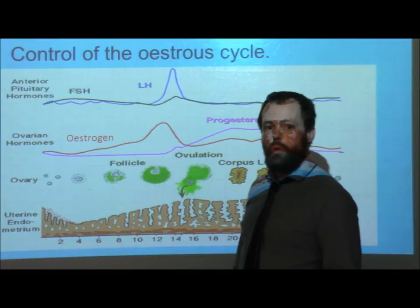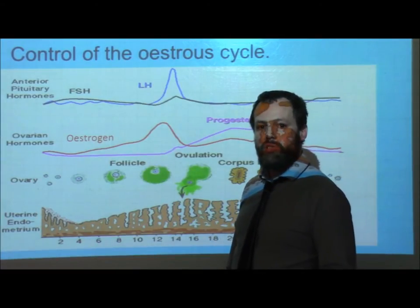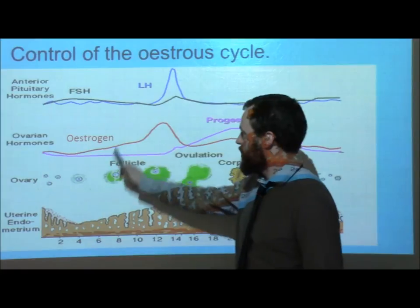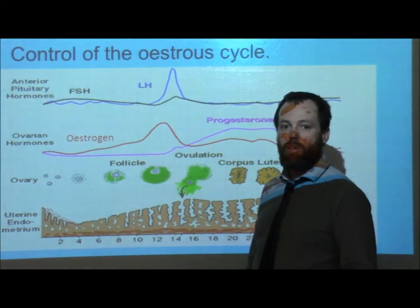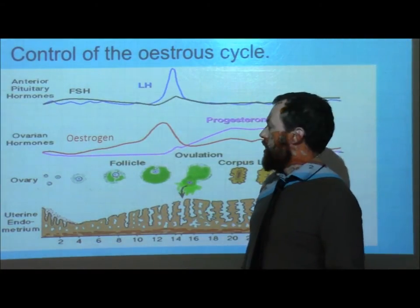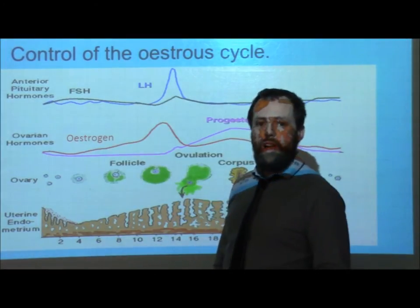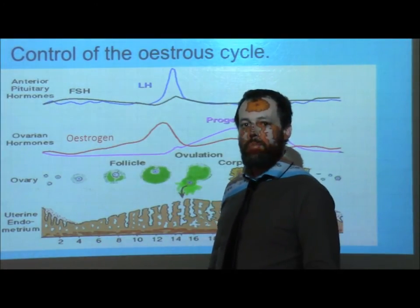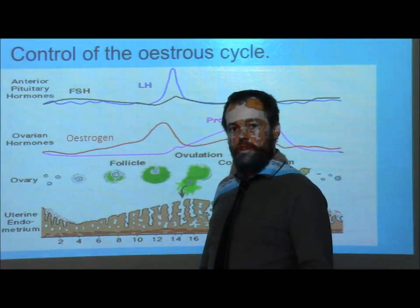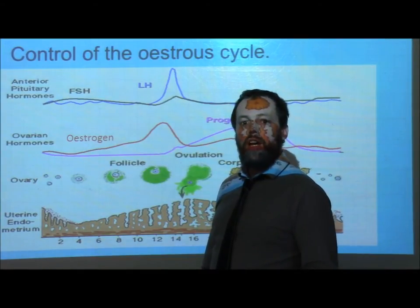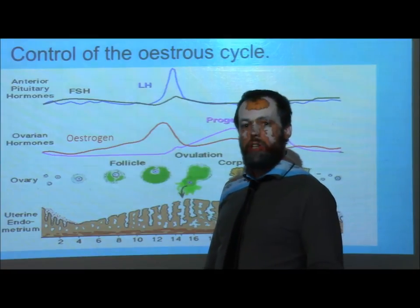The role of oestrogen is also to start to build up the uterus lining. We can see that as oestrogen is increasing, so the uterus lining is also increasing. This relationship between oestrogen and FSH is known as a negative feedback loop — FSH stimulates the production of oestrogen, and when oestrogen hits a certain level, it will inhibit FSH.